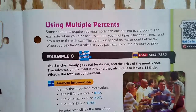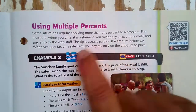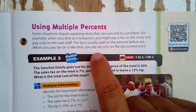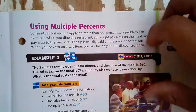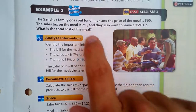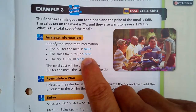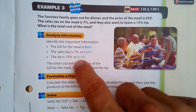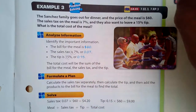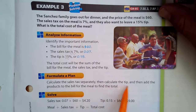Using multiple percents: some situations require applying more than one percent to a problem. For example, when you dine at a restaurant you might pay tax on the meal and also leave a tip for the wait staff. The tip is usually calculated on the amount before tax, and when you pay tax on a sale item you pay tax only on the discounted price. The plan is to calculate the sales tax separately, then calculate the tip, then add both to the meal total.